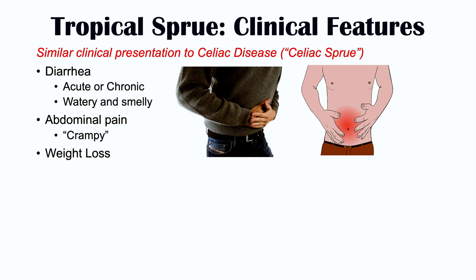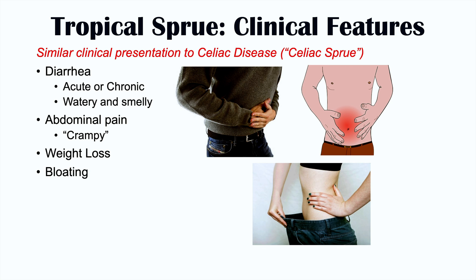Another finding in tropical sprue is weight loss. Because of the diarrhea and the malabsorption of nutrients, patients are not going to be able to absorb nutrients as well as they should. There's also going to be bloating, as bacteria within the gastrointestinal system digest those unabsorbed nutrients, producing gas. A big component of tropical sprue that results in many of these symptoms is nutrient malabsorption.